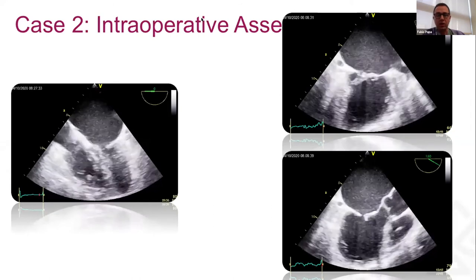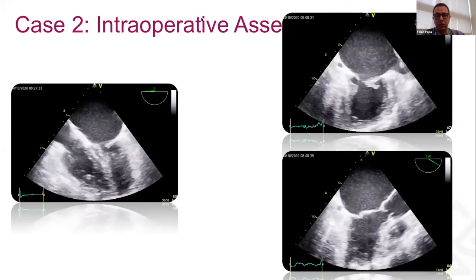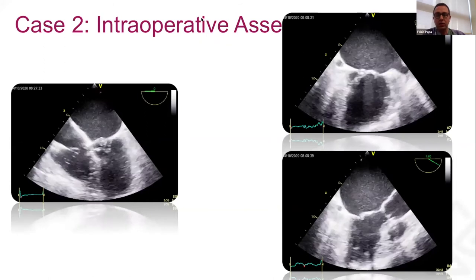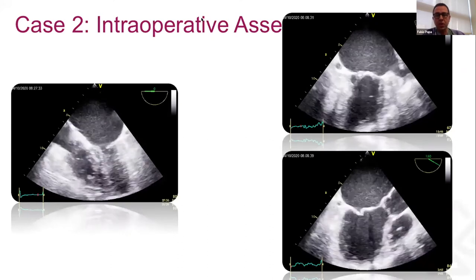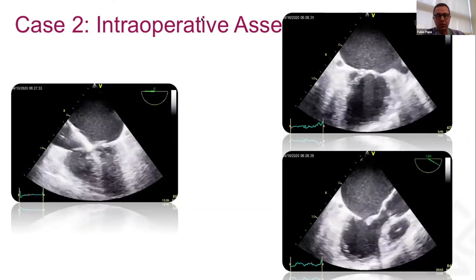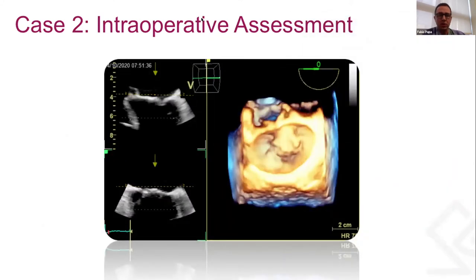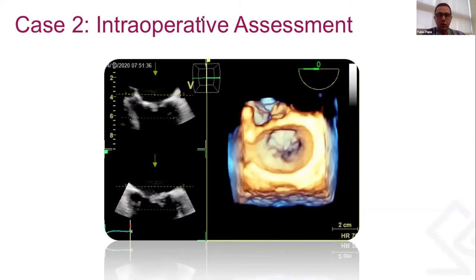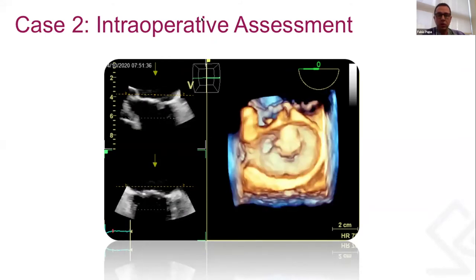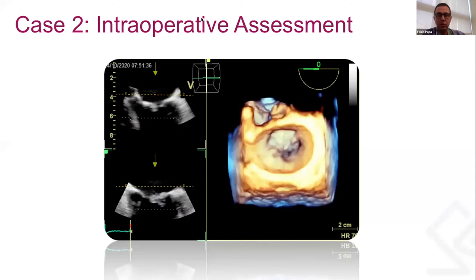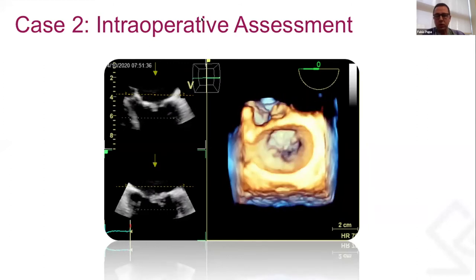Both leaflets are really thickened with restricted mobility, especially the posterior leaflet which is nearly immobile. The anterior leaflet shows a classic hockey-stick appearance in the diastolic frame, which is quite specific for rheumatic mitral valve disease. On 3D assessment using the zoom module and looking from the atrial perspective, we can see the mitral valve in the center of the screen with the aortic valve at 12 o'clock, demonstrating poor opening of both leaflets due to rheumatic disease.